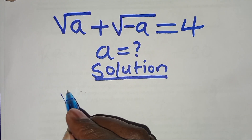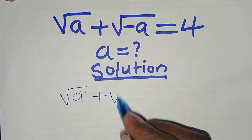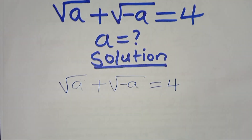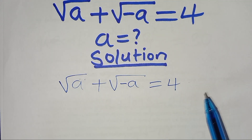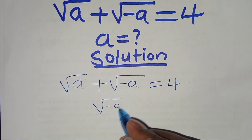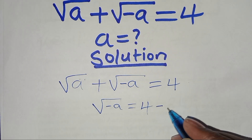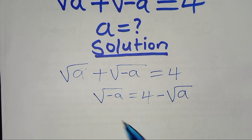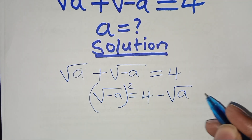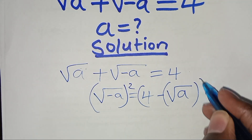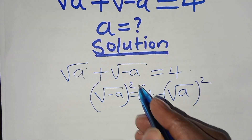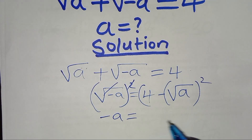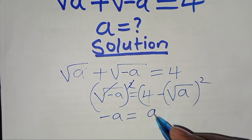We have √a + √(−a) = 4. Let's take √a to the right-hand side, so that we have √(−a) = 4 − √a. Now we square both sides to eliminate the square root sign, giving us: −a = (4 − √a)².